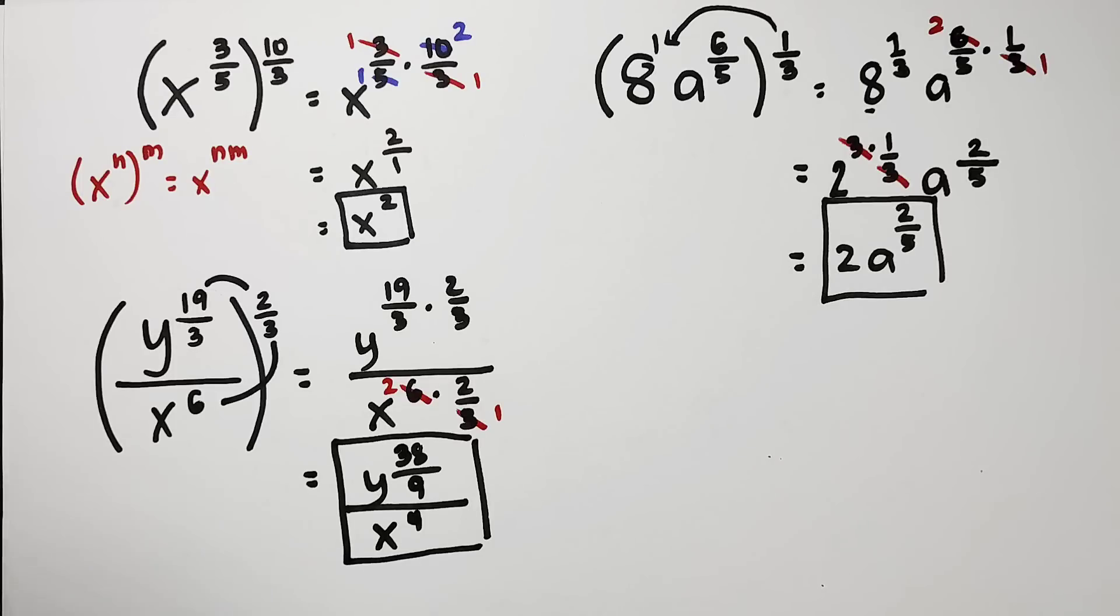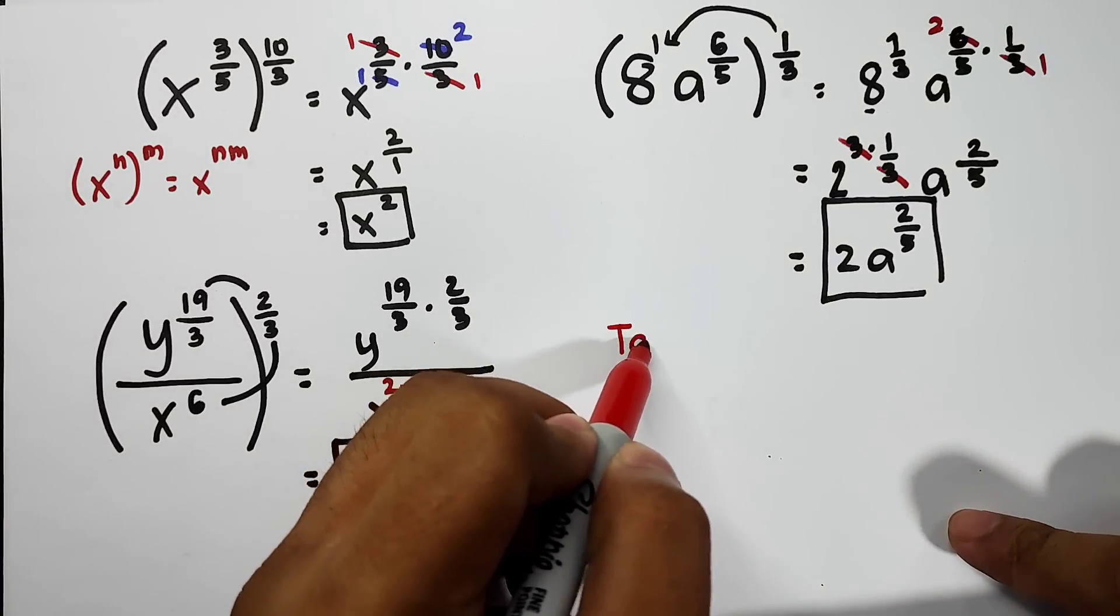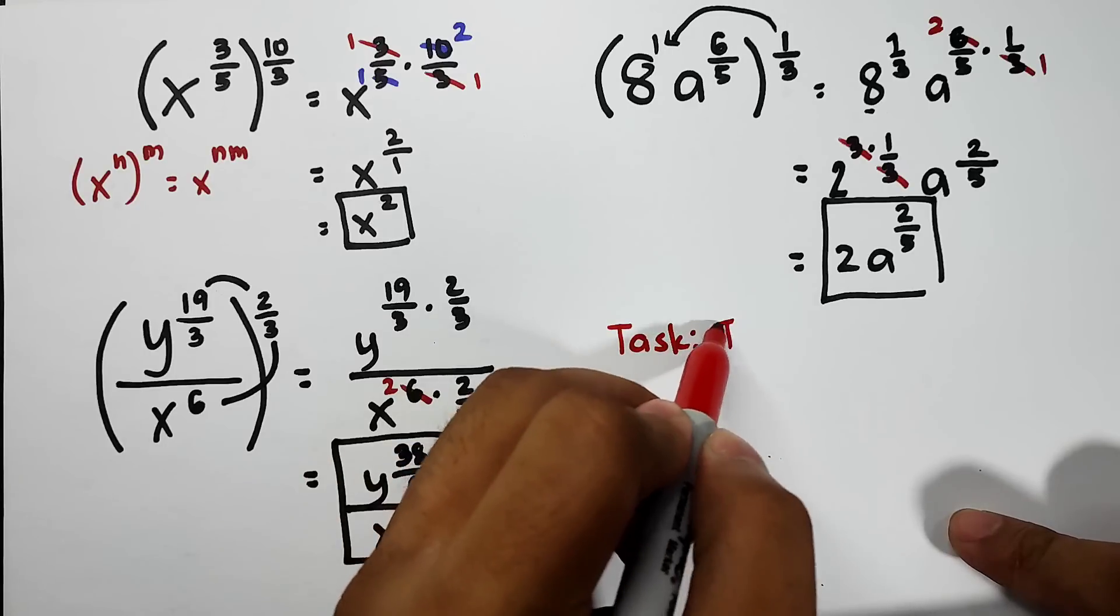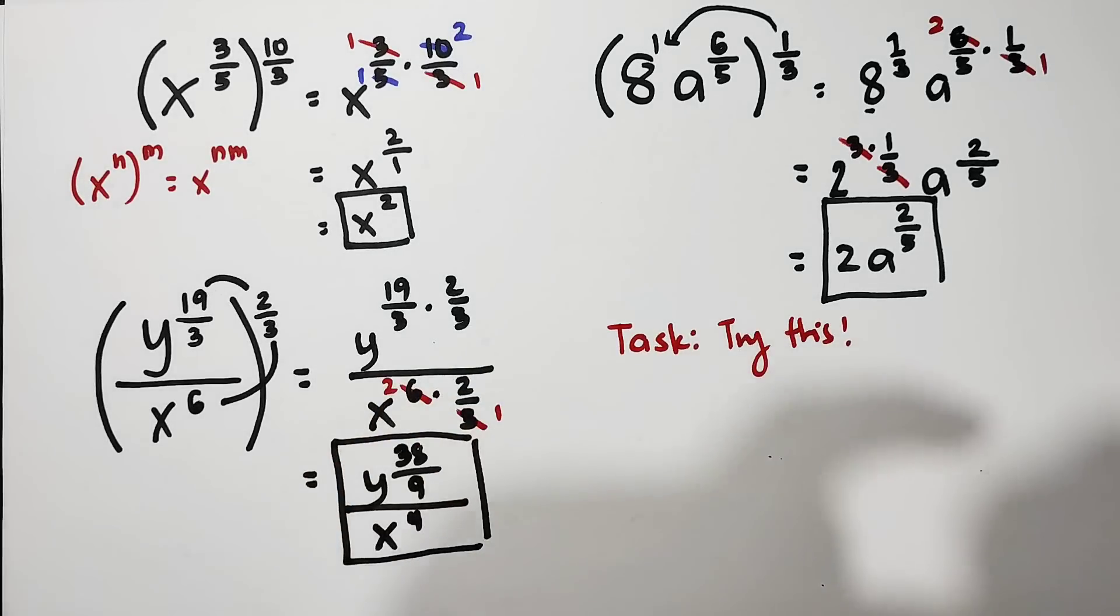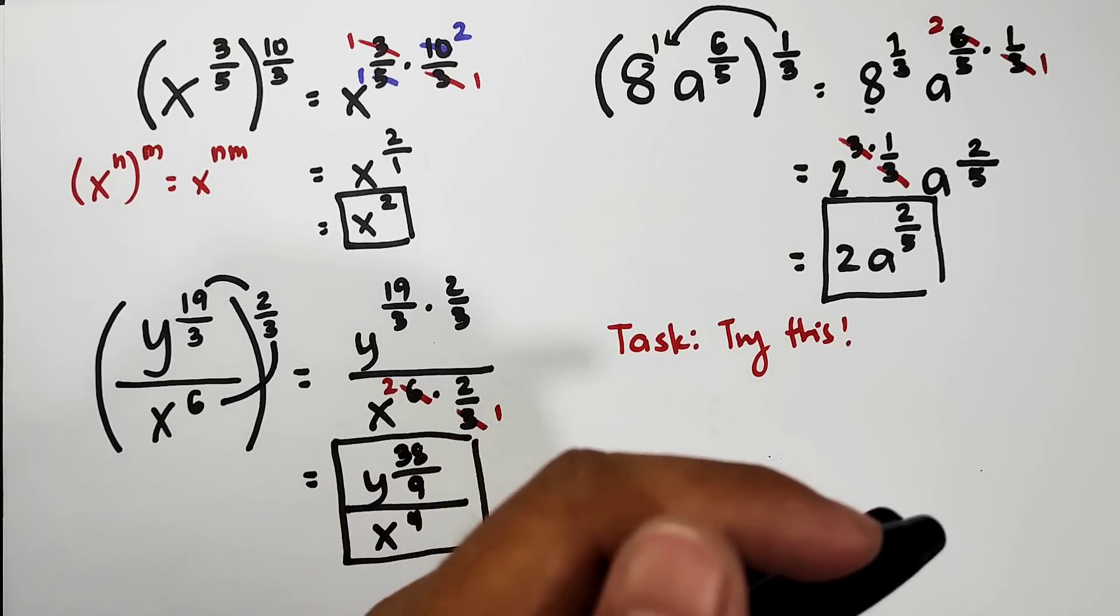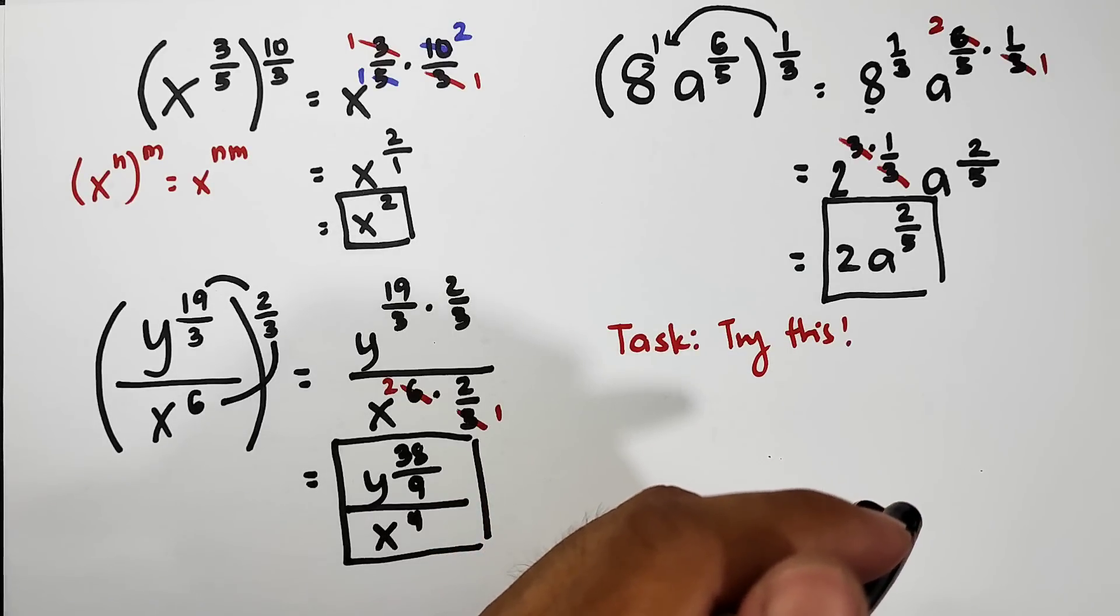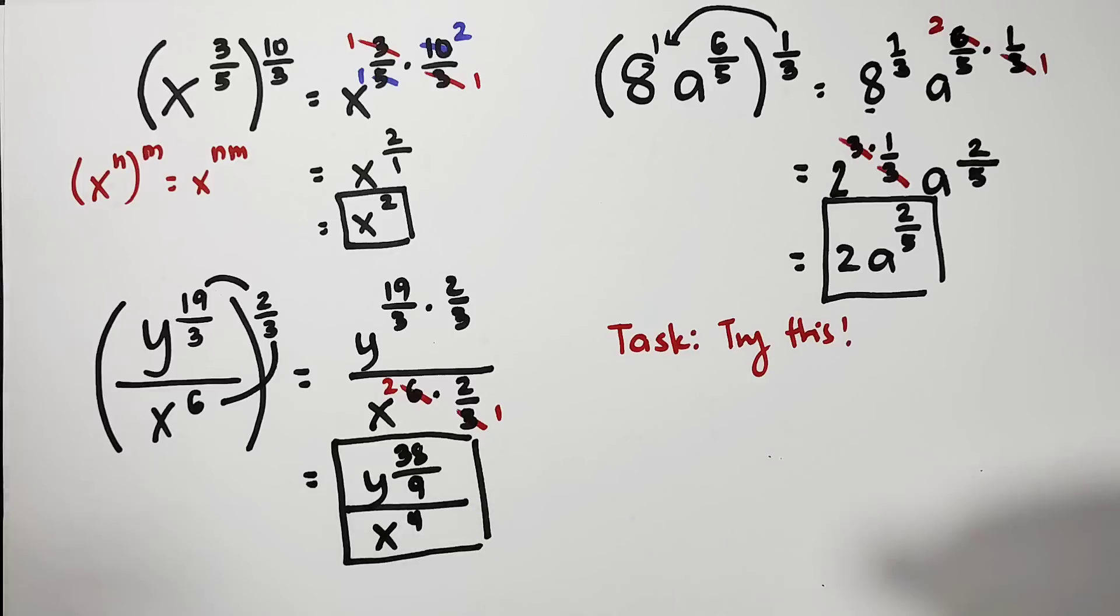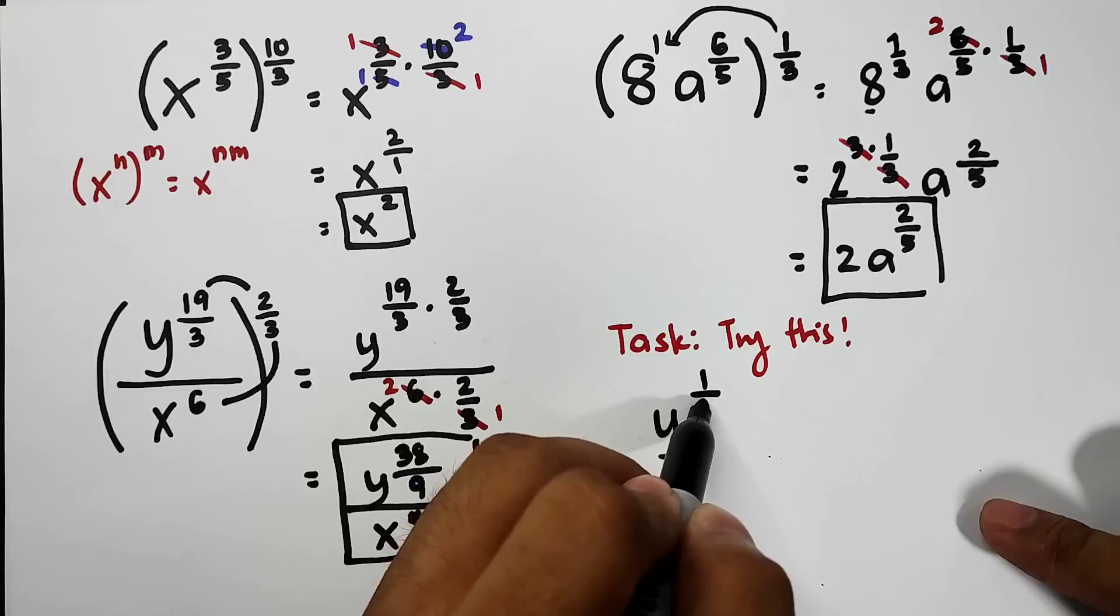Right now I will give you an assignment. This is your task guys. Try this. Here's our given. I will give you a problem and I hope to see in our comment section the answer for this problem. So here's our problem, let me find some problem for you. Let's try this: we have y raised to 1 over 7 times y raised to 3 over 2.